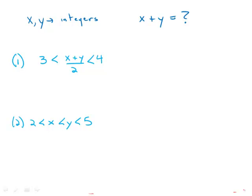If x and y are integers, what is the value of x plus y? Statement number one tells us that we have x plus y over 2 is between 3 and 4.